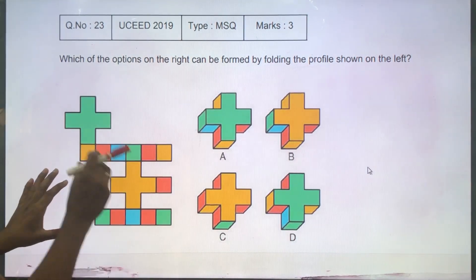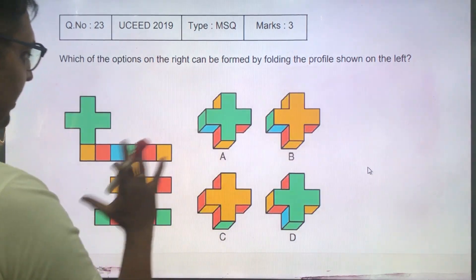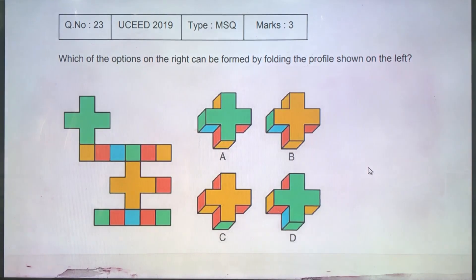So basically there is a piece of paper with different colors. It's going to be folded into a shape like this. We need to find out which of these options can be formed from this piece.